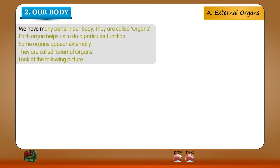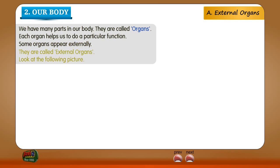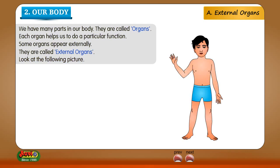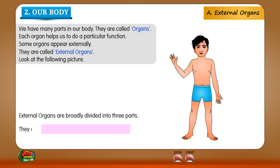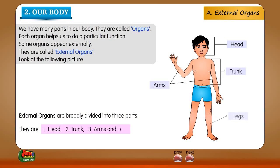We have many parts in our body. They are called organs. Each organ helps us to do a particular function. Some organs appear externally — they are called external organs. External organs are broadly divided into three parts: 1. Head, 2. Trunk, 3. Arms and legs.